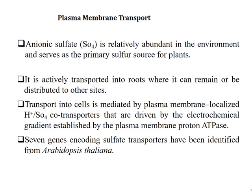Anionic sulfate with a negative charge is relatively abundant in the environment and serves as the primary sulfur source for plants. It is actively transported into roots where it can remain or be distributed to other sites. Plasma membrane transport into cells is mediated by plasma membrane-localized hydrogen-sulfate co-transporters that are driven by the electrochemical gradient established by the plasma membrane proton ATPase.